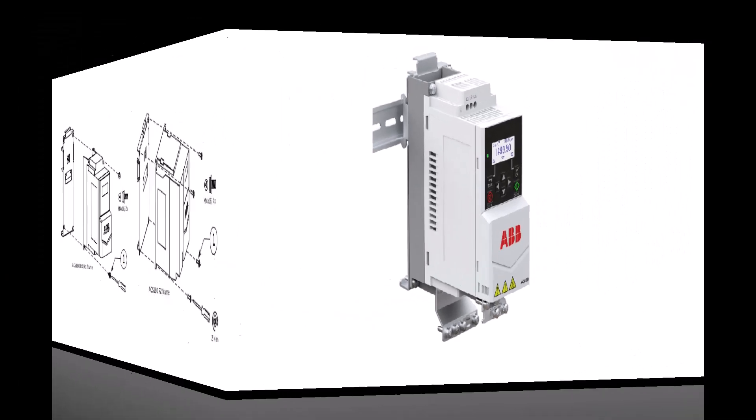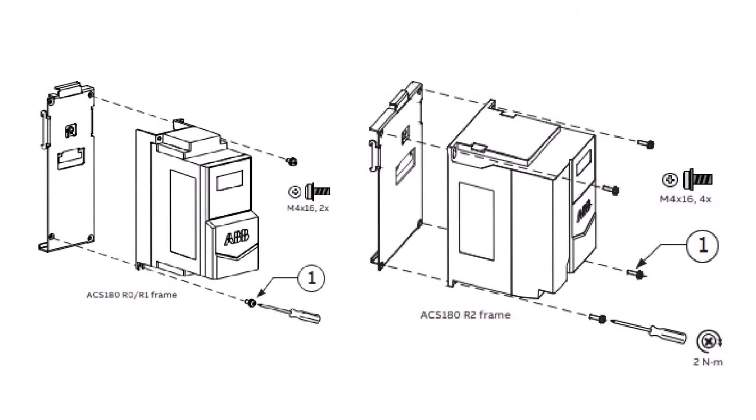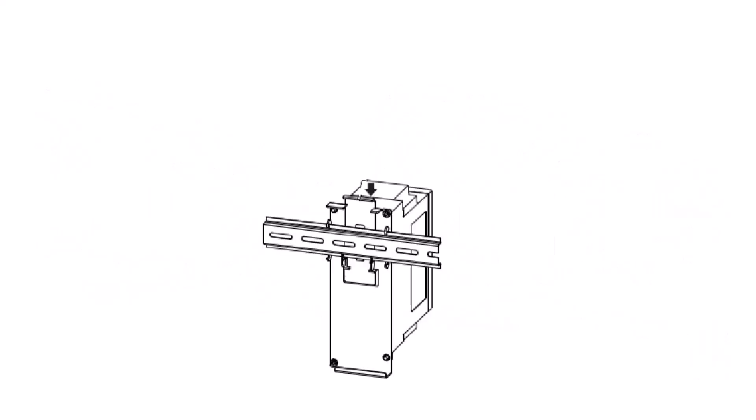For frames R0 to R2, an optional BDRK-01 or BDRK-02 DIN rail kit is required for DIN rail mounting. Align the mounting holes on the DIN rail kit to the back of the drive before installing the hardware. Next, connect the top portion of the DIN rail kit to the DIN rail.